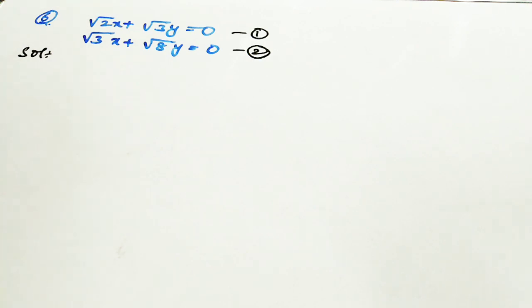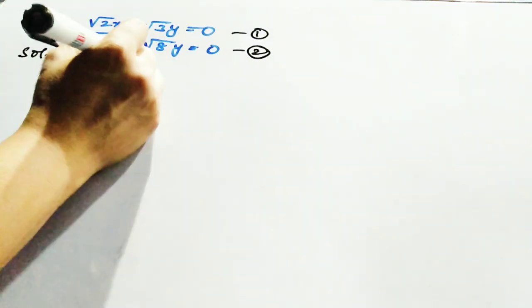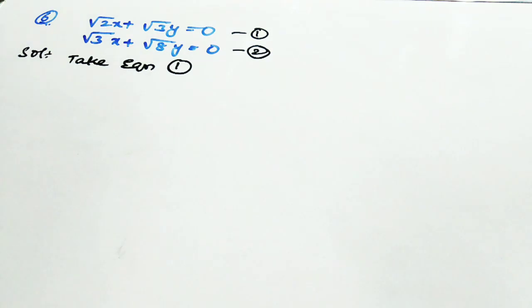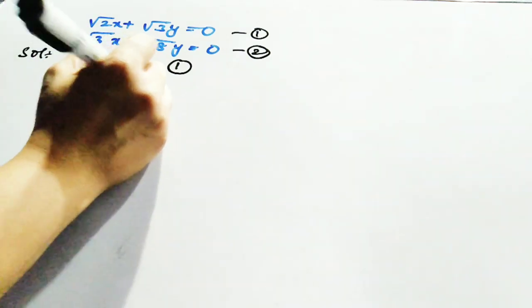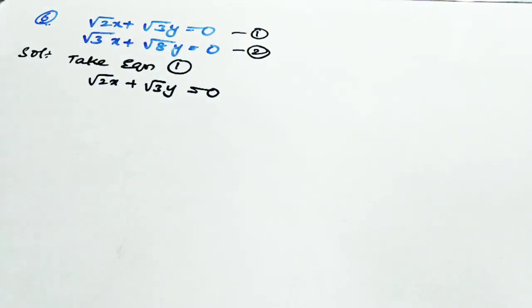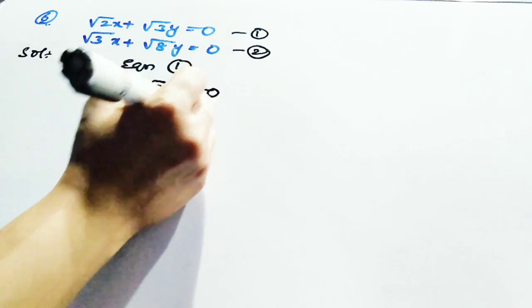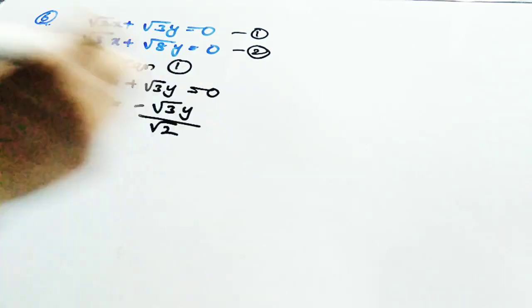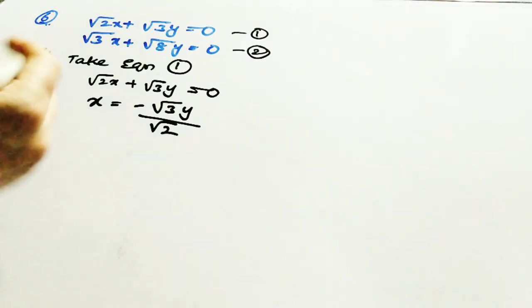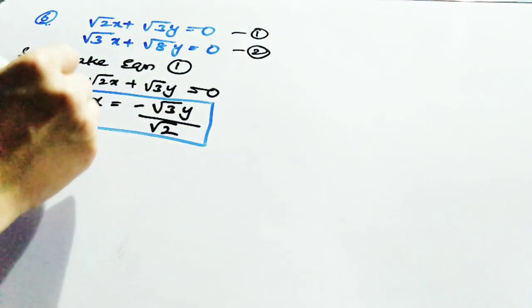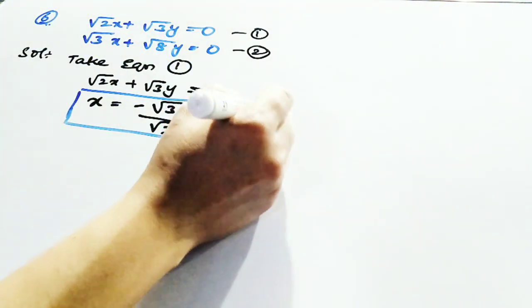First check whether the equations satisfy the condition of a pair of linear equations in 2 variables. Since they do, take equation 1 to get the value of one variable. Your equation is root 2 times x plus root 3 times y equal to 0. So x equals minus root 3 times y divided by root 2. Consider this as equation 3.